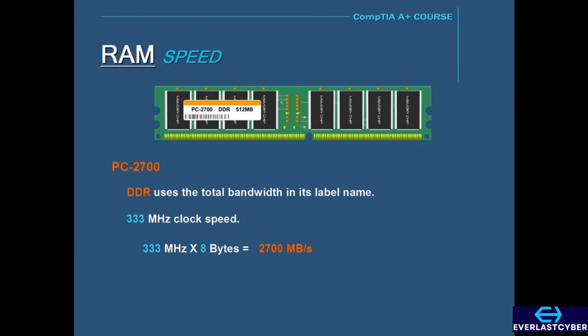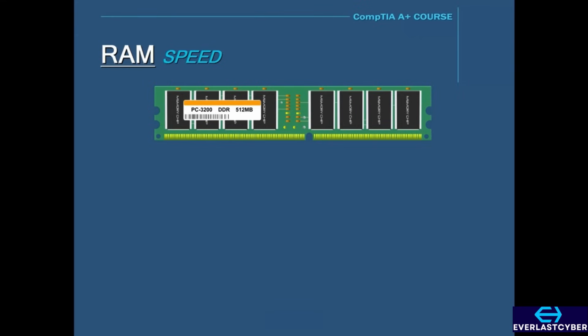Another example is PC3200. PC3200 has a clock speed of 400 MHz. So 400 times 8 equals 3200, which is where we get the name PC3200.